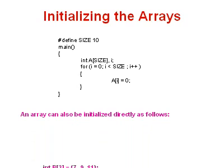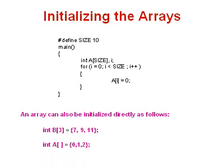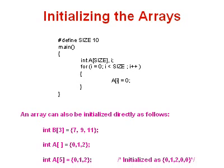An array can also be initialized directly. For example, int b[3] = {7, 9, 11}. So the first value will be 7, second will be 9, and third will be 11. Similarly we can have int a[] without providing the size: {0, 1, 2} — automatically the size will be 3. We can also have int a[5] = {0, 1, 2}, where only 3 values have been initialized but the size of the array is 5. That means the last 2 values will be initialized automatically as 0.